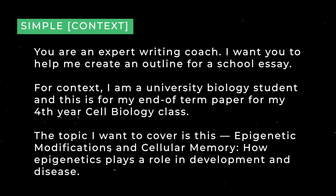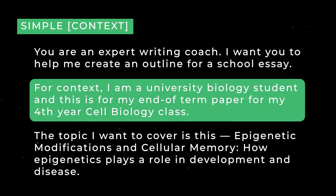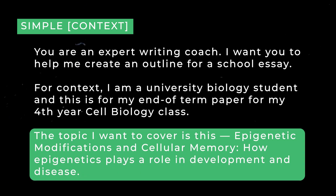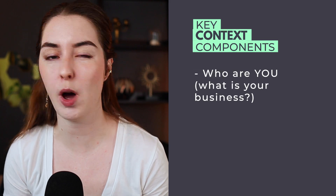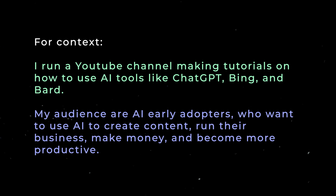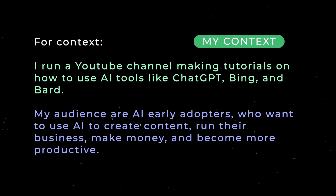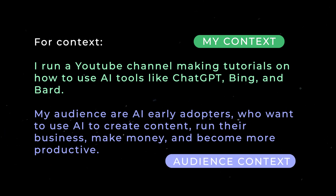Here's a prompt for outlining a paper for a college class. After the role and action, I've included context important to the task: I'm a university biology student, and this is for my end-of-term paper for my fourth-year cell biology class, on the topic of epigenetic modifications and cellular memory. For a business example — say writing Twitter posts — the two key context components are: who are you and what is your business, and who is your audience? After giving ChatGPT a role and the action, I've added context about myself and my business, and context about my audience. You can keep it to one sentence each, or elaborate further for more specificity.